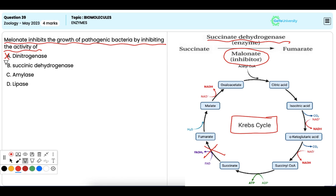Option C: Amylase. It is incorrect. Amylase breaks down starch into sugars and is unrelated to this type of inhibition.